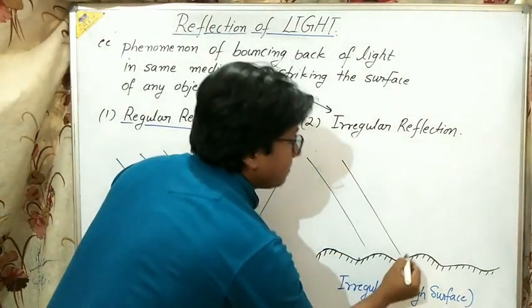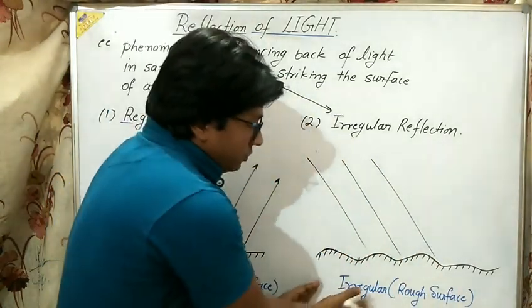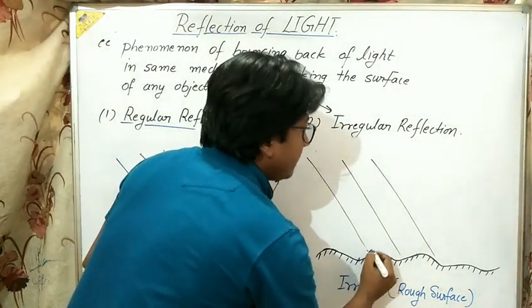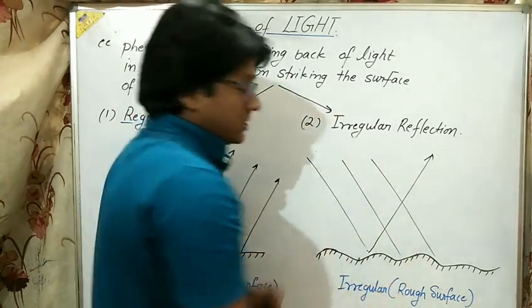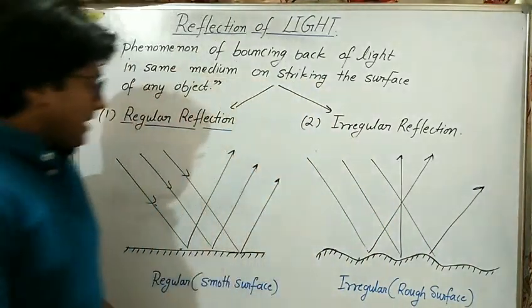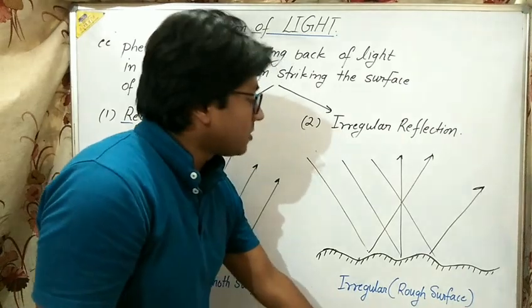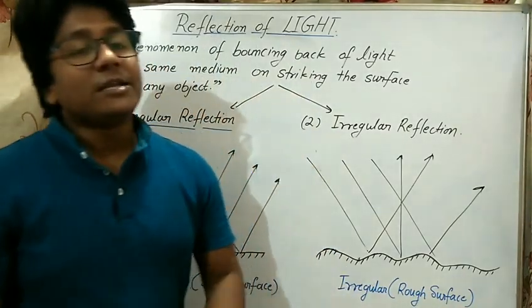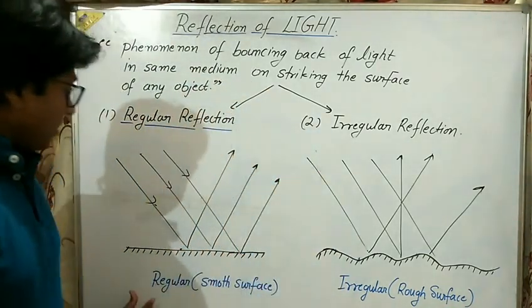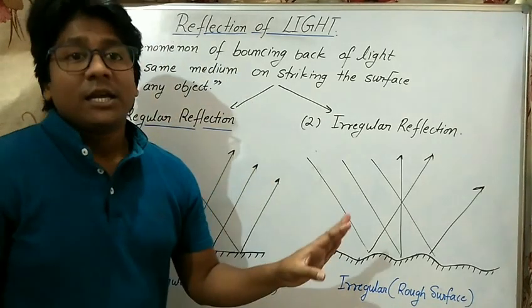For irregular surfaces, we will strike some light rays. Due to the irregularity or rough surface, the light bounces back in the medium but not in a fixed direction — some light rays move this way, some that way. A definite pattern is followed in regular reflection, but in irregular reflection on a rough surface there is no definite pattern.